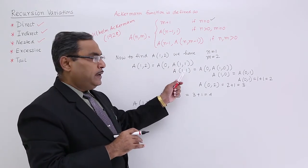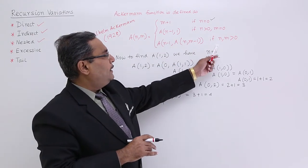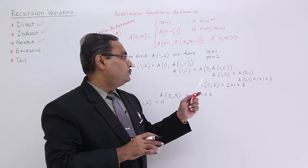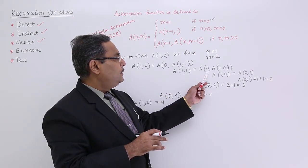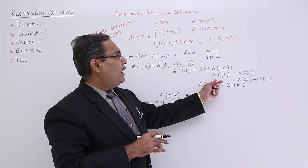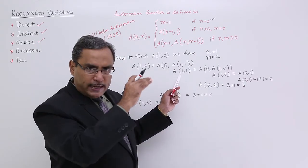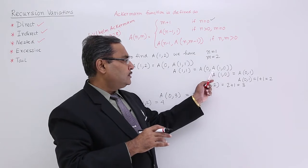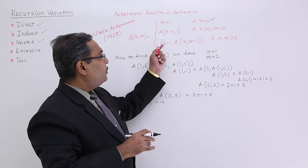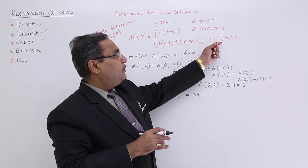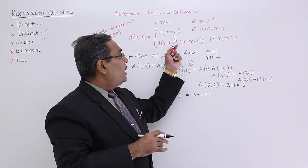Now A(1, 1) will be called. Again, both are greater than 0, so it becomes A(0, A(1, 0)). Now A(1, 0): here m is 0, so it applies the second case — A(n-1, 1) = A(0, 1). Maintaining the indentation, I am calling A(0, 1).